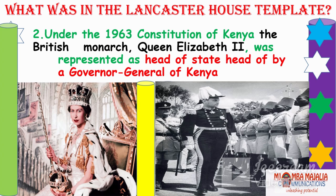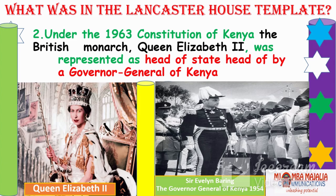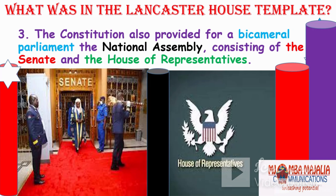The Constitution also provided for a bicameral Parliament: the National Assembly consisting of a Senate and a House of Representatives. 'Bi' means two, so there is the House of Representatives to deliberate and a Senate to oversee. In 1963 we had a Senate and a House of Representatives, but in 1966 the Senate was abolished. The Senate and National Assembly we see now is not totally new — that's what we started with in 1963.